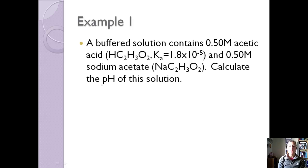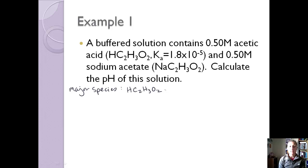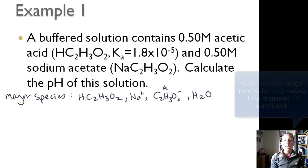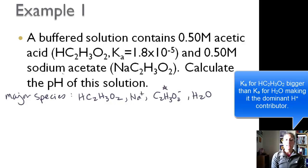We have a buffered solution containing 0.5 molar acetic acid and 0.5 molar sodium acetate, and we want to calculate the pH of the solution. The first thing we need to do is identify the major species. Since acetic acid is a weak acid, it's for the most part going to stay together. But the salt is going to totally dissociate, giving us Na⁺, C₂H₃O₂⁻, and water. So we've got our common ion, C₂H₃O₂⁻, and based on the Ka value, acetic acid is going to be the more dominant H⁺ contributor.